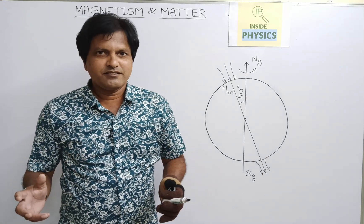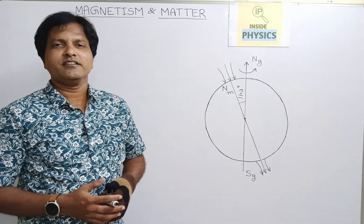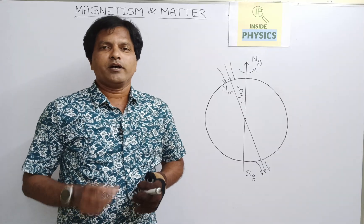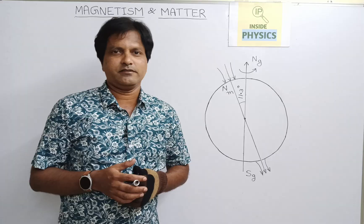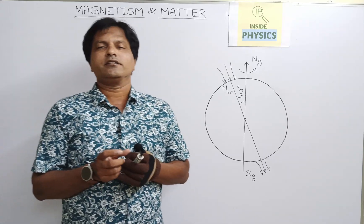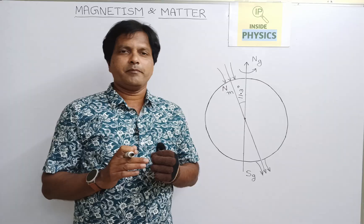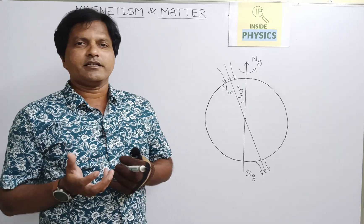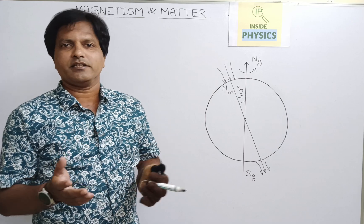Hello students, welcome to Inside Physics. Today we are going to discuss why the earth behaves like a magnet. A bar magnet which shows magnetism has a magnetic field around it. Similarly, our earth has a magnetic field around it.